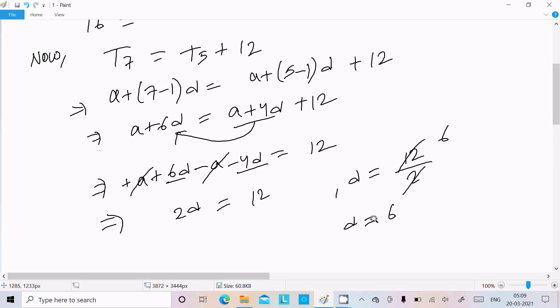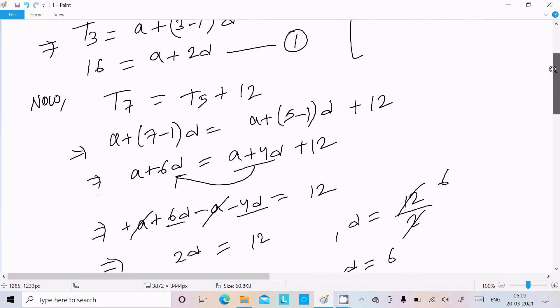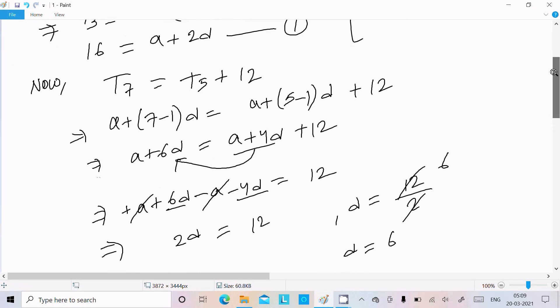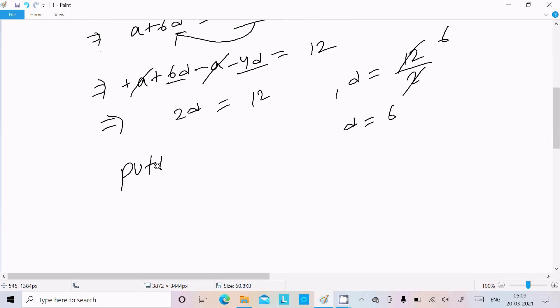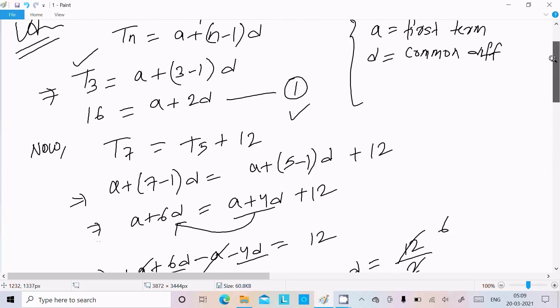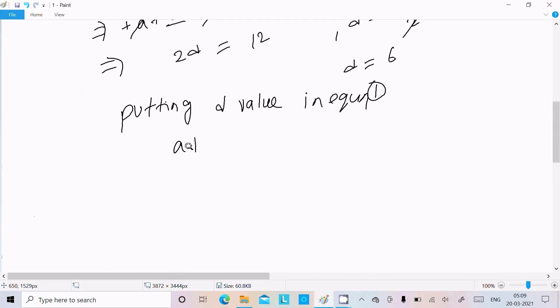Now putting the d value in equation 1: a plus 2d equals 16. We have a plus 2 into 6 equals 16, so a plus 12 equals 16. Therefore a equals 16 minus 12, so a equals 4. The first term is 4 and the difference is 6.